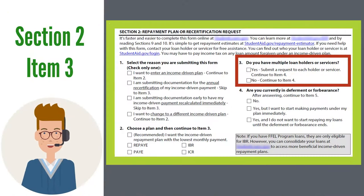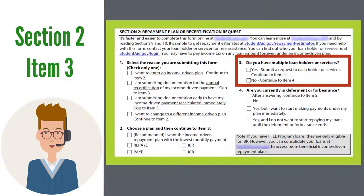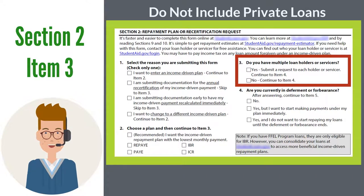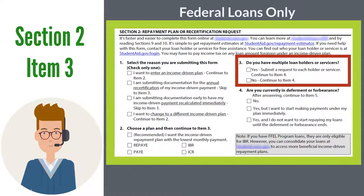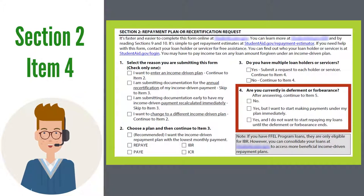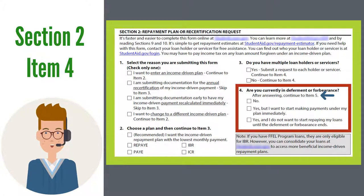Item 3: Do you have more than one student loan servicer? If so, select yes; if not, select no. Do not include any private loans in your selection here — this application is for federal student loans only. Item 4: Is your loan currently in a deferment or forbearance? Notice there is direction to move to item 5. It's important to follow this path because answering items you aren't directed to may delay the processing of your application.